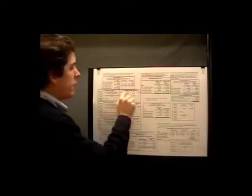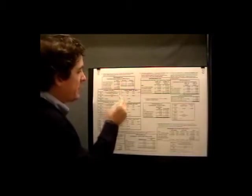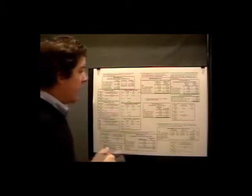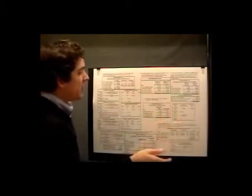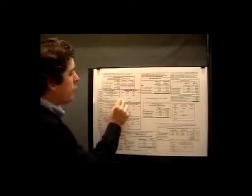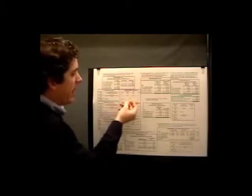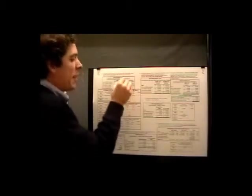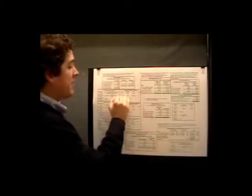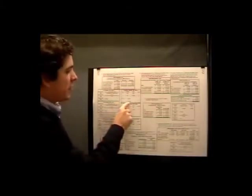Under the equation method for break-even sales, sales equals variable cost plus fixed cost plus profit. So x equals 0.6x plus $20,000 plus 0, where x is our sales volume in dollars and variable cost is 0.6 times sales. Solving for x, we subtract to get 0.4x equals $20,000. Then $20,000 divided by 0.4 gives us x equals $50,000 in sales dollars.